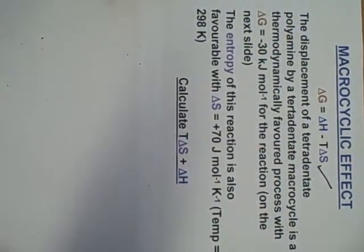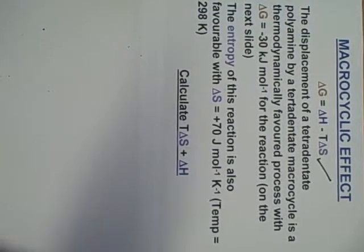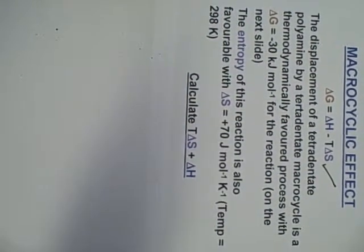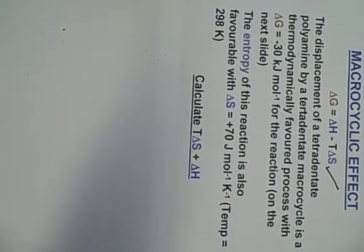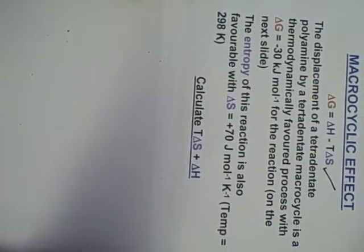The displacement of a tetradentate polyamine by a tetradentate macrocycle is a thermodynamically favoured process. We get a Gibbs of minus 30 kilojoules per mole. The entropy of the reaction is plus 70 joules per mole per Kelvin. Temperature, 298 Kelvin.